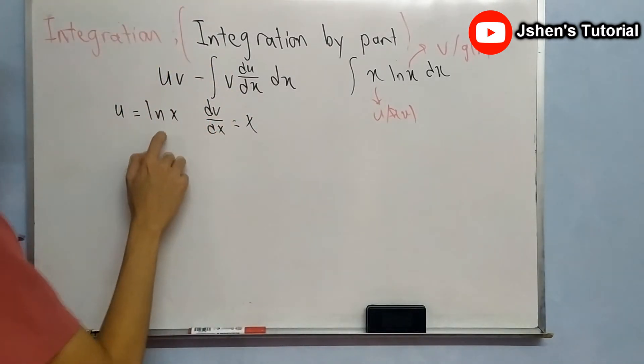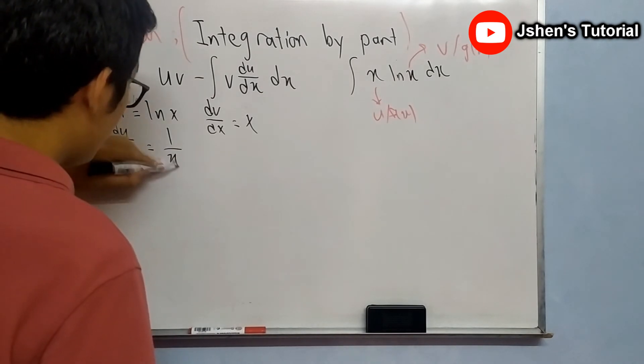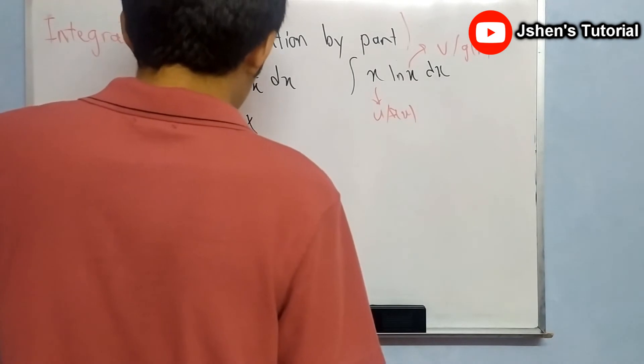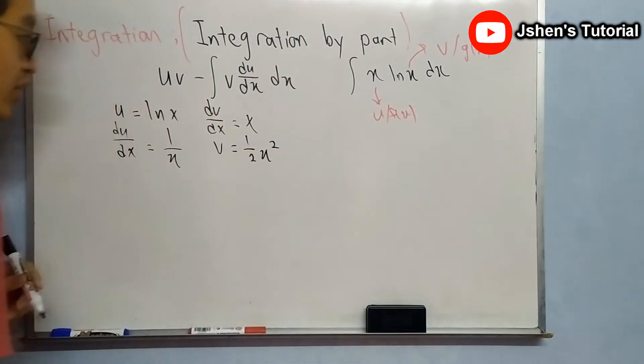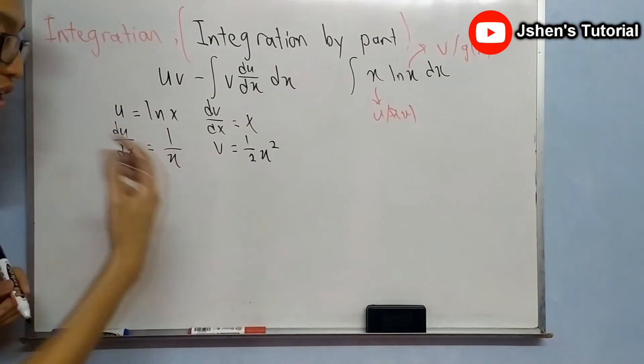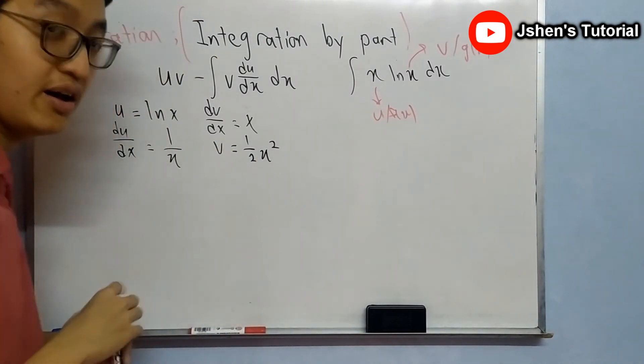Okay, let's differentiate ln x. You will get 1 over x. While integrating x, you will get 1/2 x squared. Here we are not going to add any constants when we integrate the x function.